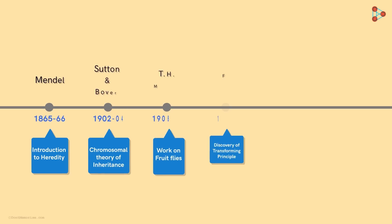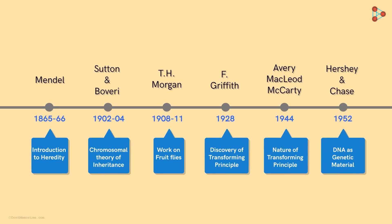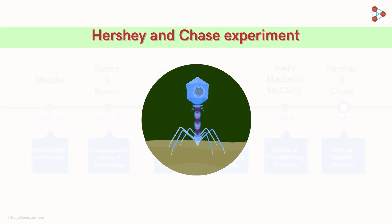Here is the timeline of the history of genetics. Beginning with the work of Gregor Mendel, we have reached this point, the experiment which proved that it is DNA which is the genetic material.